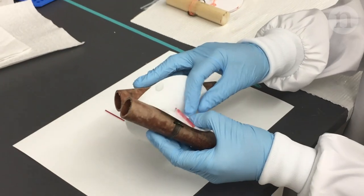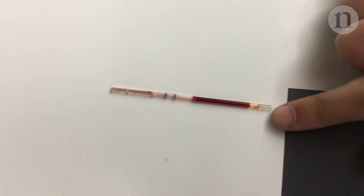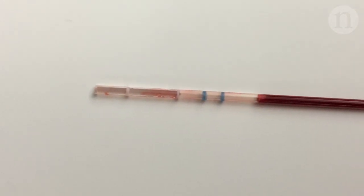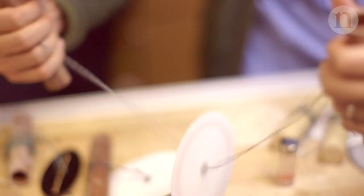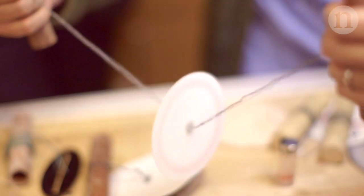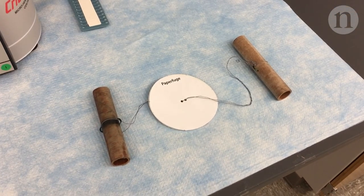A longer spin separates out the part of the blood needed for malaria testing. Named the paperfuge, this device costs just 20 cents to make out of paper, fishing wire and wood.